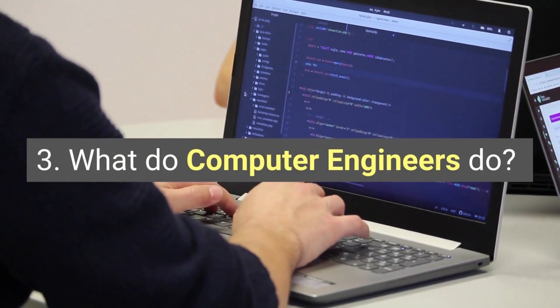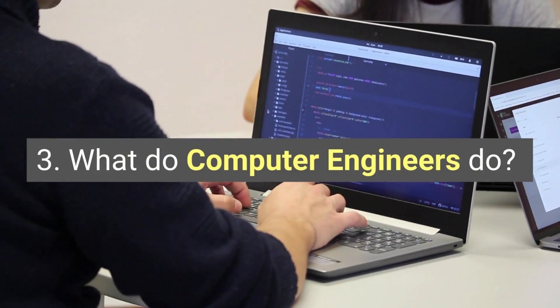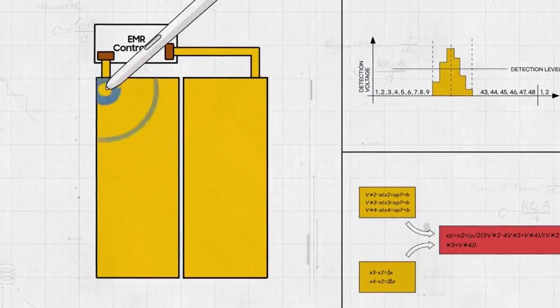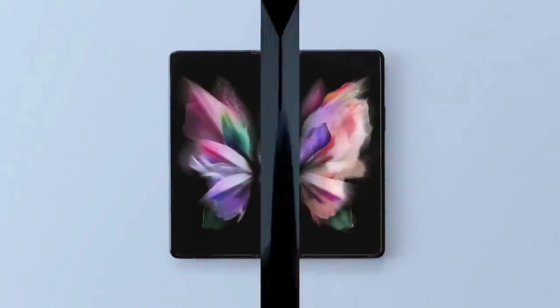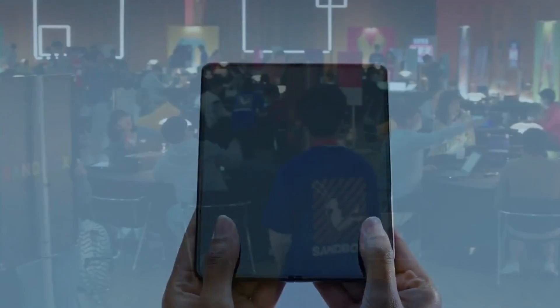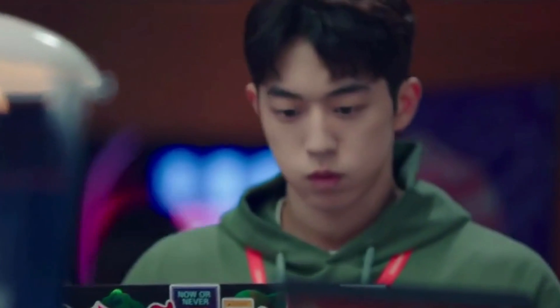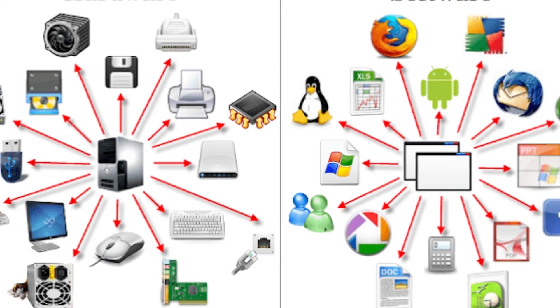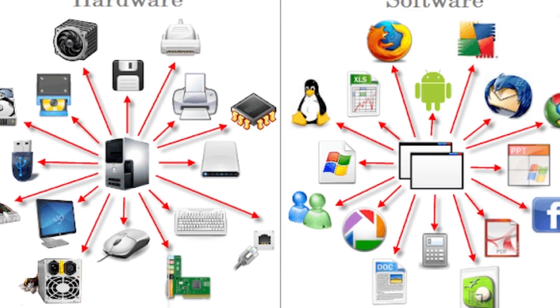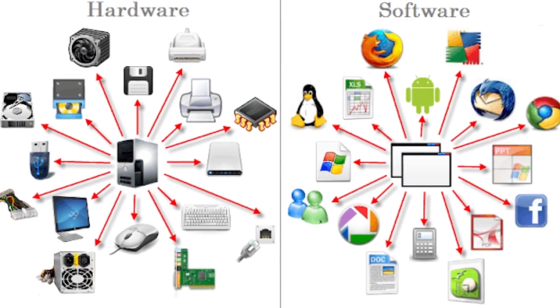Three, what do computer engineers typically do? Computer engineers are involved in many hardware and software aspects of computing, from the design of individual microcontrollers, microprocessors, personal computers, and supercomputers, to circuit design. Computer engineers use their extensive knowledge of hardware and software design and computer programming to make computing platforms and applications more efficient and effective. At the career level, there are two main avenues under computer engineering, namely hardware and software engineering.